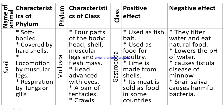The next animal is the snail. Characteristics of the phylum: soft-bodied, covered by a hard shell, locomotion by muscular legs, respiration by lungs or gills. The phylum is Mollusca. Characteristics of class: four body parts — head, shell, muscle foot, and flesh mass; head advanced with eyes; a pair of tentacles present; they can crawl. The class is Gastropoda.